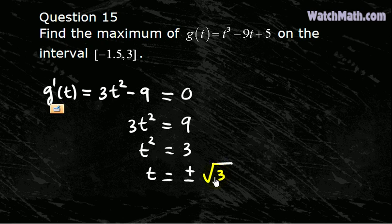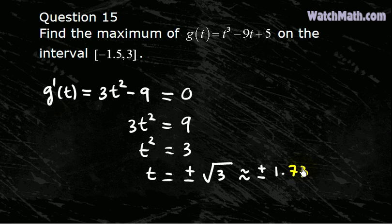But we are only interested in this interval. Now, square root of 3 is approximately 1.73, so this is approximately plus or minus 1.73. So in particular, negative 1.73 will be outside this interval, but square root of 3 is inside that interval.